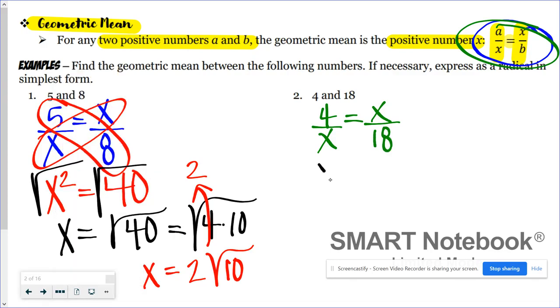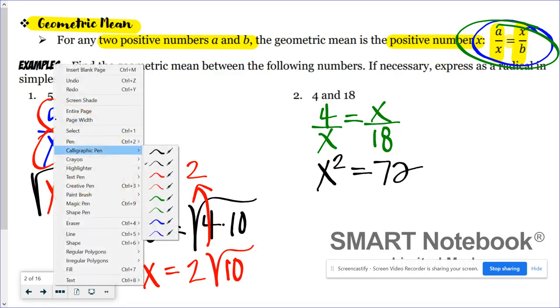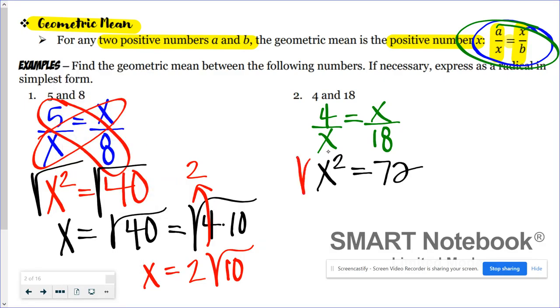So x times x is x squared, and 4 times 18 is 72. Then I can take the square root of both sides because I just want x, so x equals the square root of 72.